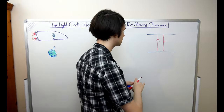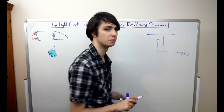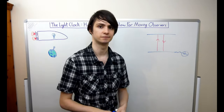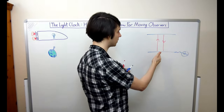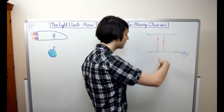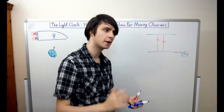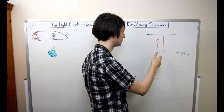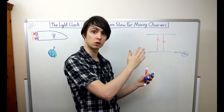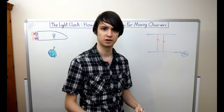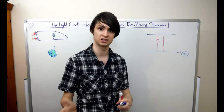We can also attach a detector to our bottom mirror which detects when the light beam strikes it. So when we switch our light clock on a beam of light is emitted from the bottom mirror and then bounces back and forth between the two mirrors. Each time this beam of light strikes the bottom mirror the detector makes a tick sound like a clock. Our light clock here is an accurate clock — there's exactly the same length of time between ticks of the clock.